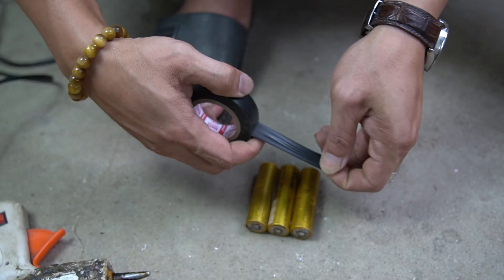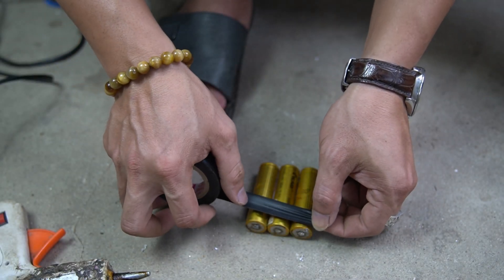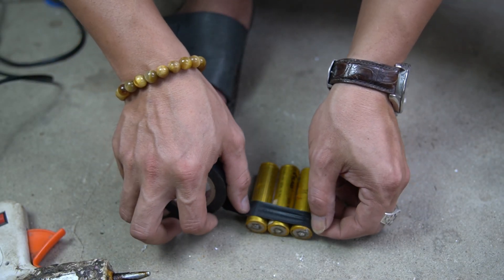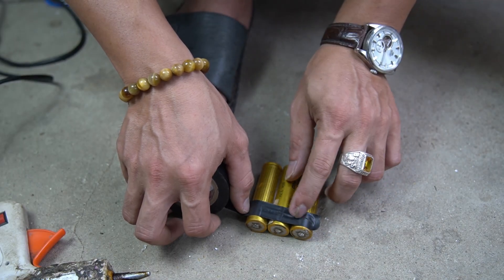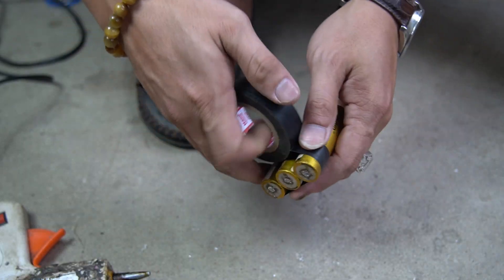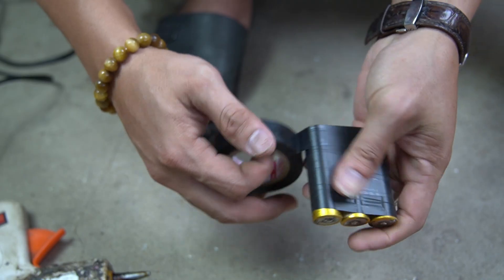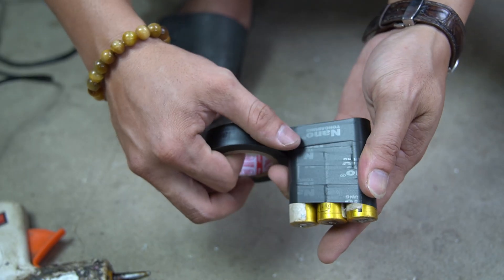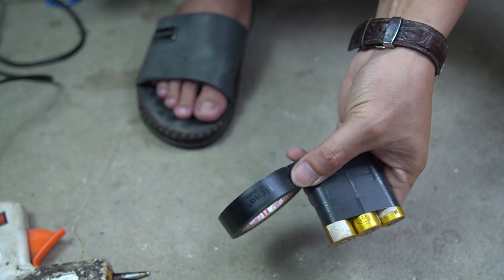Next, use electrical tape to wrap around the three batteries to create an insulating layer. Wrap each layer on top of each other until the battery cover is completely covered.